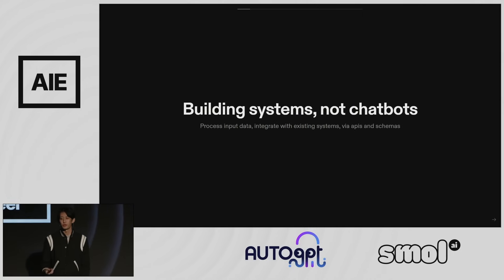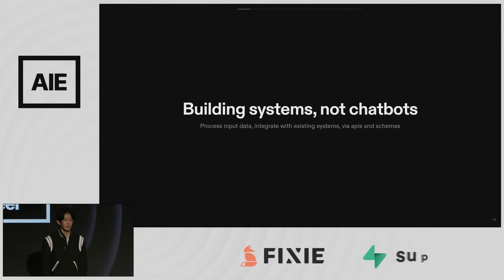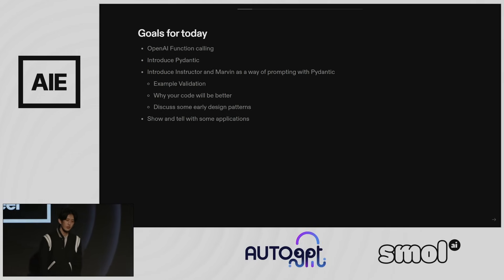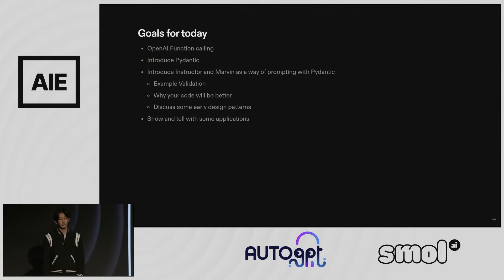Although language models were introduced to us through ChatGPT, most of us are actually building systems and not chatbots. We want to process input data, integrate with existing systems via APIs or schemas that we might not have control over. The goal for today is to introduce OpenAI function calling, introduce Pydantic, then introduce Instructor and Marvin as libraries to make using Pydantic to prompt language models much easier — giving us better validation and cleaner code.